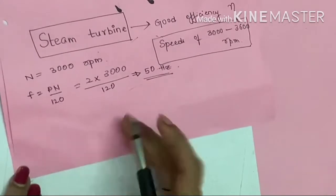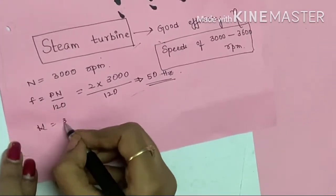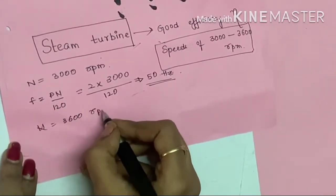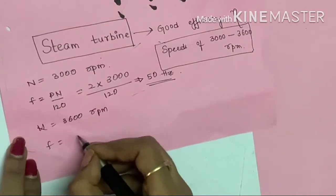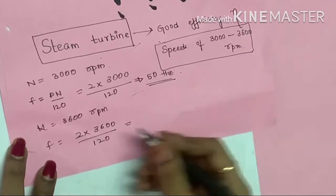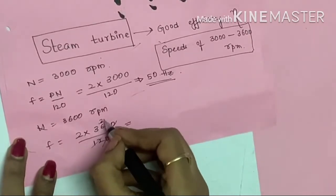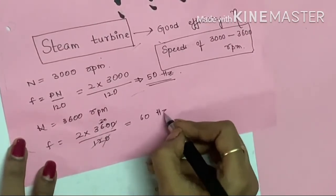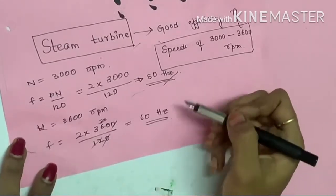And if I consider N is equal to 3600 rpm, again F is equal to 2 into 3600 by 120. If you see this, you'll be getting 60 Hertz.